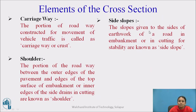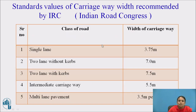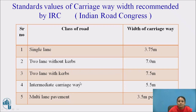Side slope is given to the sides of earthwork of a road in embankment or cutting for stability. The standard carriageway widths given by IRC are: single lane — 3.75 meters; double lane — 7 meters; two lane — 7.5 meters; intermediate carriageway — 5.5 meters; and for multi-lane pavements — 3.5 meters per lane.